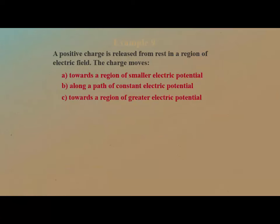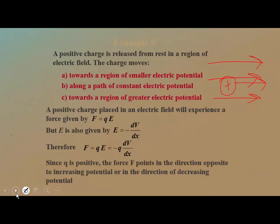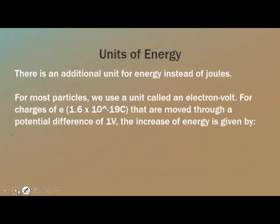A positive charge released from rest in an electric field — does it move toward a region of smaller or greater electric potential? Remember, a positive charge always wants to follow the field lines, and field lines point in the direction of decreasing electric potential. So a positive charge moves toward a region of smaller electric potential. The negative sign in the field equation explains this: it points toward decreasing potential.